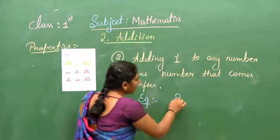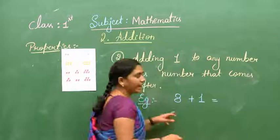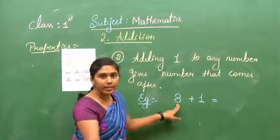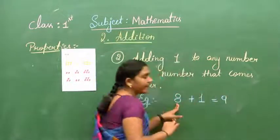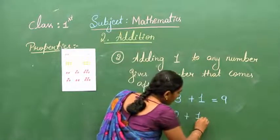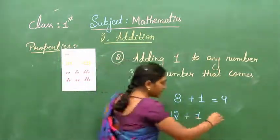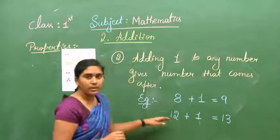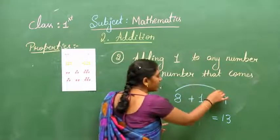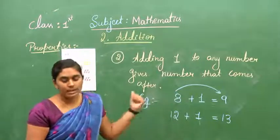For example, I am going to take number 8. 8 plus 1 — the number after 8 is 9. Or you can say, 12 plus 1 — the answer for 12 plus 1 will be 13. So if you add 1 to any number, you will get the next number, the number that comes after. This is the second property.